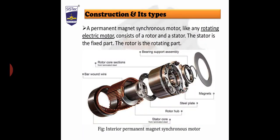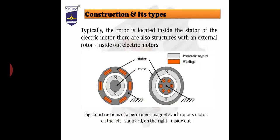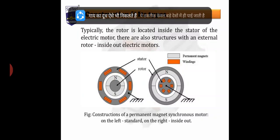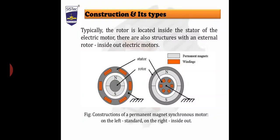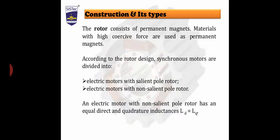Now we will move on to the construction and classification. A permanent magnet synchronous machine consists of two main parts: one is called the stator and the other is called the rotor. You can see the diagram — the total construction of the permanent magnet synchronous machine is shown in the figure. This is an interior permanent magnet synchronous machine, consisting of a rotor as well as the stator. The stator is the stationary part and the rotor is the rotating part. Typically the rotor is located inside the stator, but there are also structures with an external rotor — an inside-out electrical motor. So there are two types of construction used in a permanent magnet synchronous machine, and in both types the rotor consists of a permanent magnet.